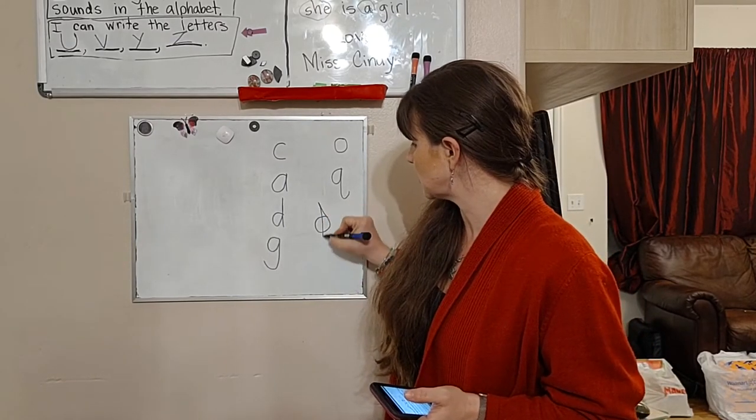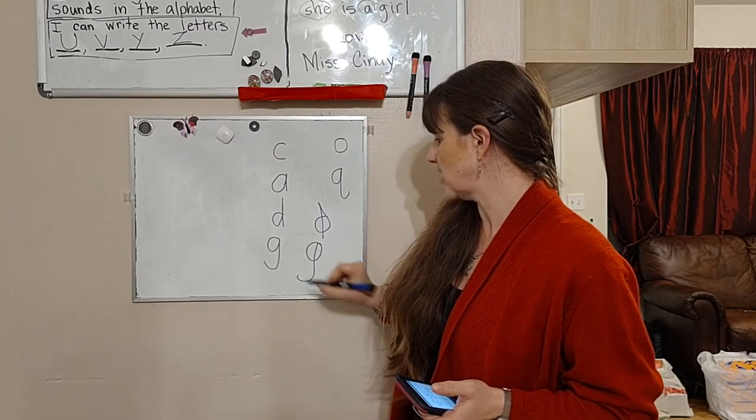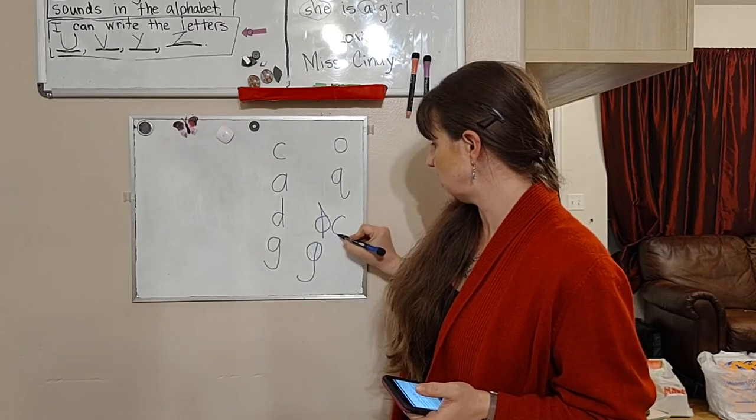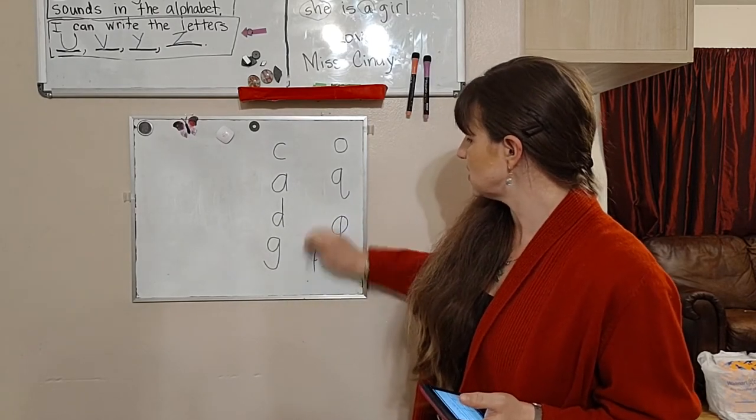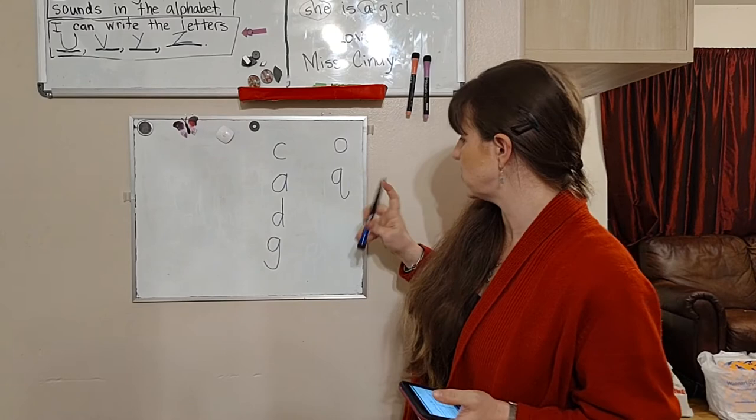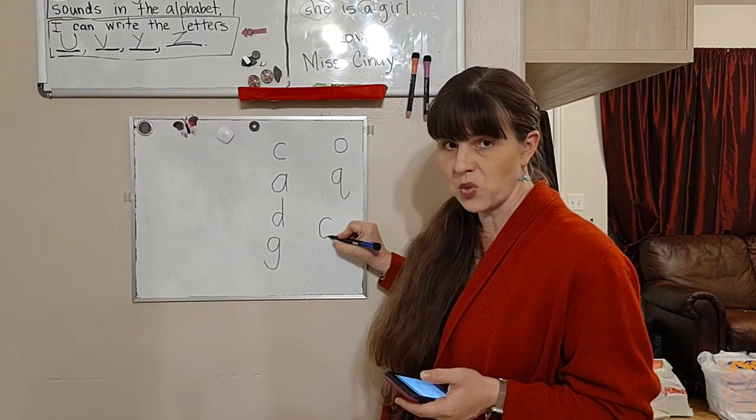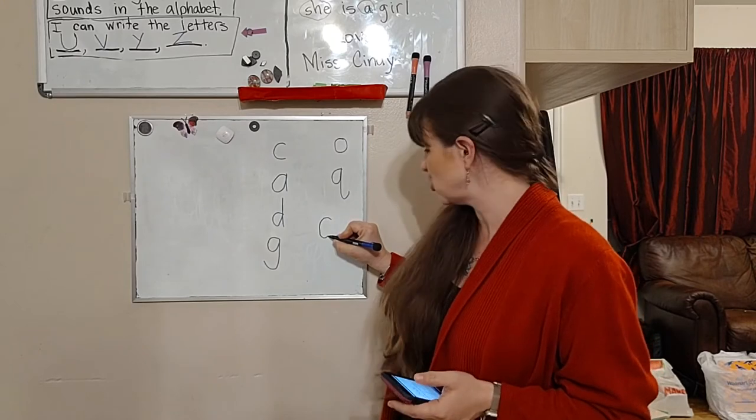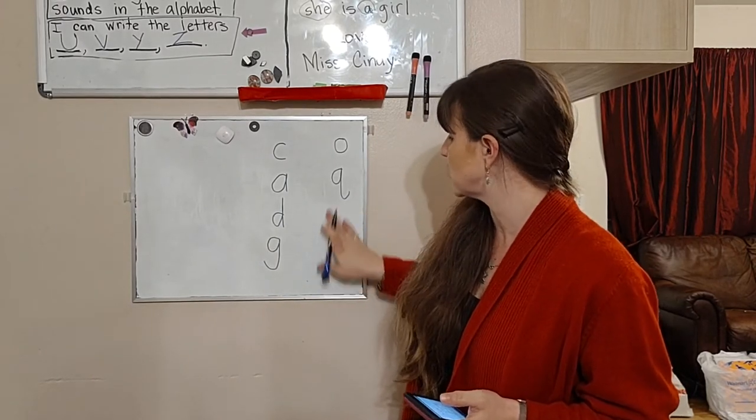Otherwise their d is going to look like that and their g is going to look like that and their a is going to look like that. So one of the things that I tell kids to help them is I'm like, okay, make a magic c, okay now stop. All right, guess what? We're going to go straight up and down, like straight like a soldier, and then back down.